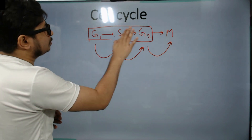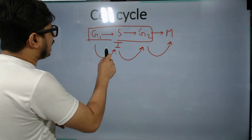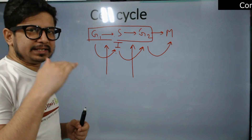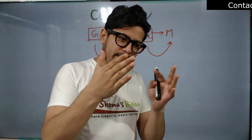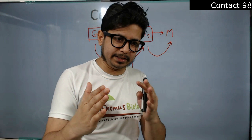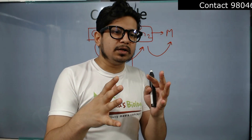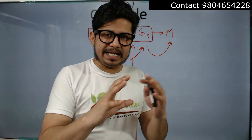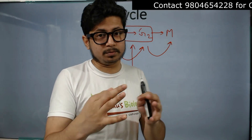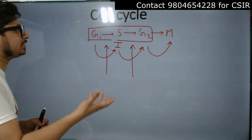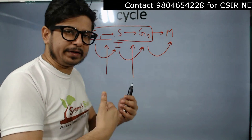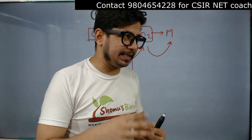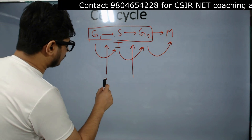When the cell migrates from one phase to another to perform a specific function, there are checkpoints. A checkpoint is a time point between two different phases — or between two important functions of the cell cycle — to protect the cell from damage, especially DNA damage. The cell always checks for cellular health and DNA integrity before moving to the next step of cell division.